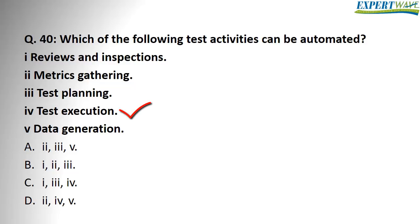I will pick option 4 — test execution — because I know it can for sure be automated. So if option 4 can be automated, the correct answer is either C or D. We simply need to pick something else we know for sure. Reviews involve humans for sure, so option 1 cannot be automated.